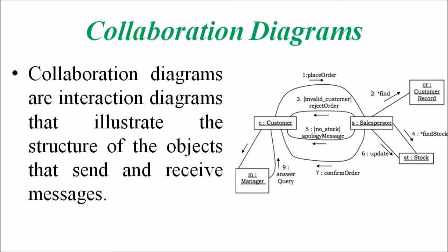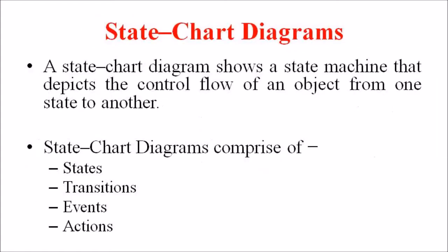Now we are discussing the State Chart Diagram or State Diagram. A State Chart Diagram shows a State Machine that depicts the control flow of an object from one state to another. A State Machine portrays the sequence of states which an object undergoes due to events and their responses to events. A State Chart Diagram comprises of states (simple or composite state), transitions between states, events causing the transitions, and actions due to the events.